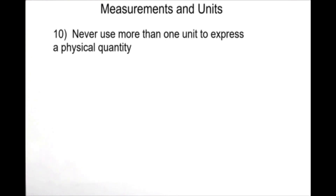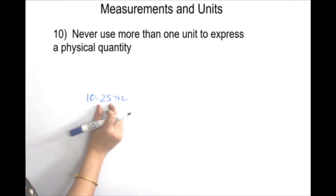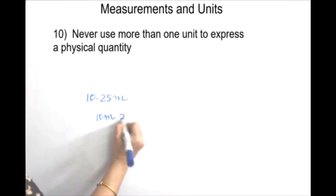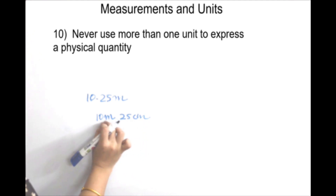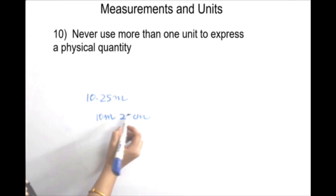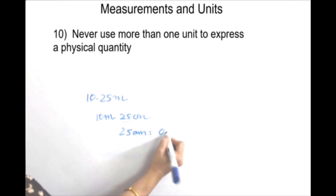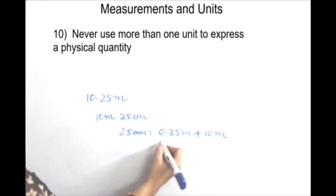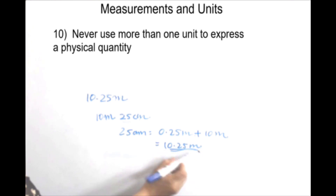For the 10th rule, consider the measurement 10.25 m. We cannot write a physical quantity in two units, such as 10 m 25 cm. Instead, we convert 25 cm into meters, which is 0.25 m, and then add it to 10 m to get 10.25 m. We cannot express a physical quantity in two units.